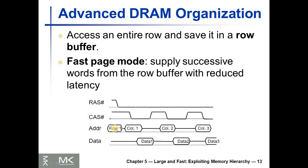In fast page mode, the row address is sent, then the column address is sent and we get one data word. Then we only need to give a new CAS and new column address to get another data word, without needing to resend the row address, because the entire row is in the row buffer — we only change the column. This is one early optimization.